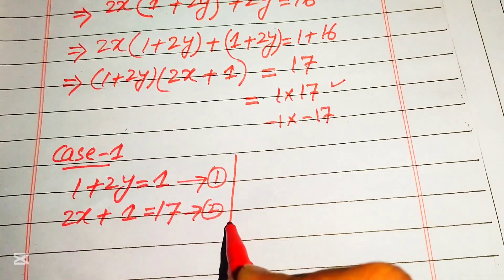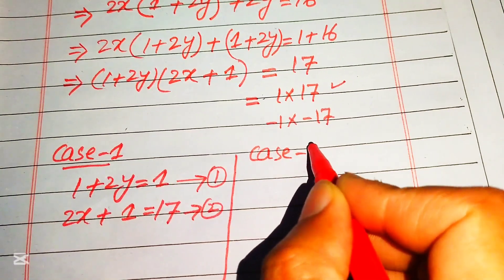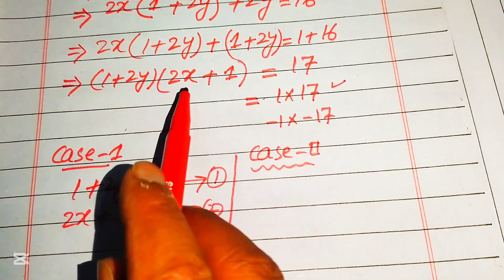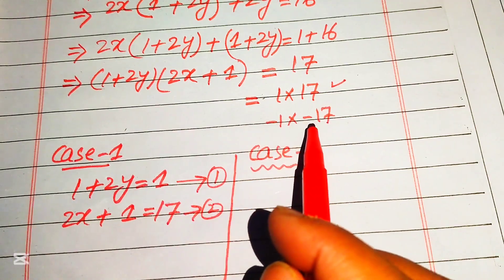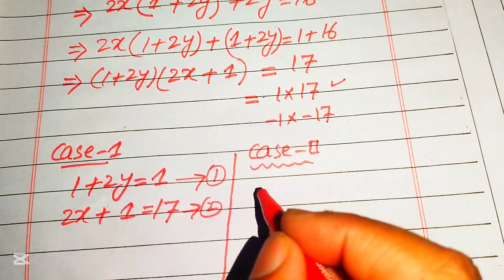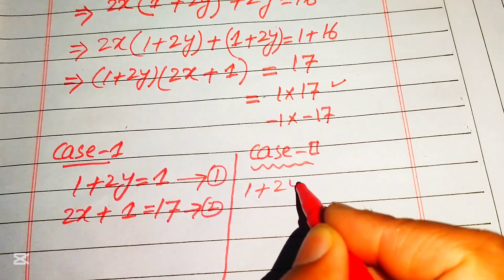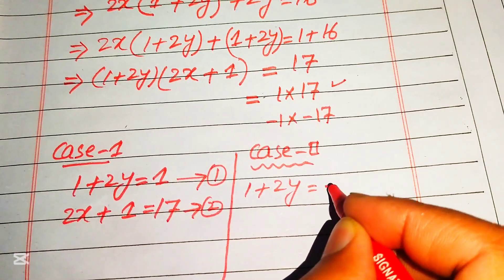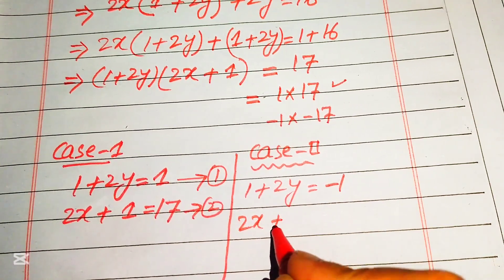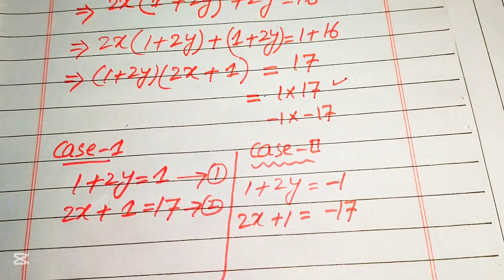In Case 2, we compare the factors with the second option: 1 plus 2y equals minus 1 (equation 3), and 2x plus 1 equals minus 17 (equation 4).